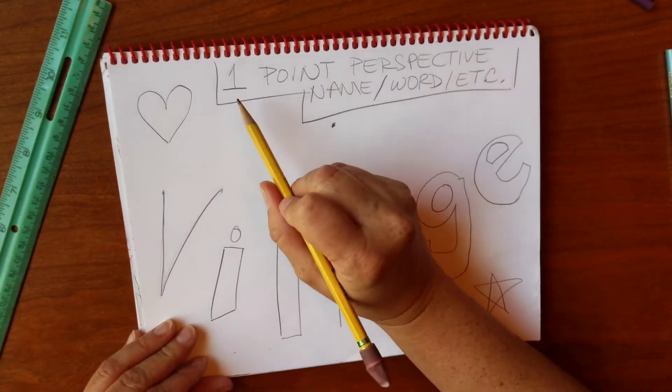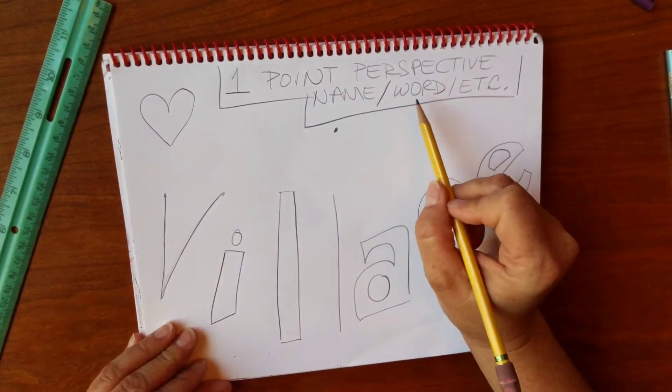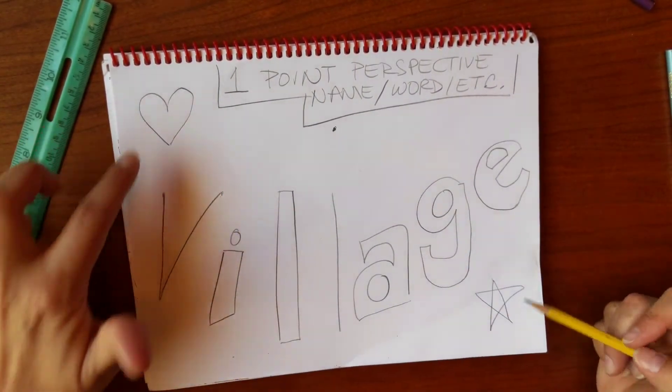I'm going to demonstrate how to draw a one-point perspective name or word. So I have a couple shapes here.